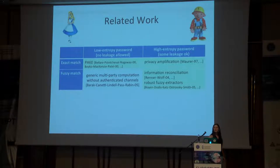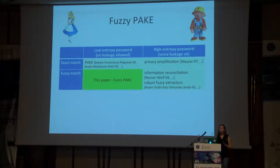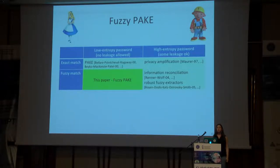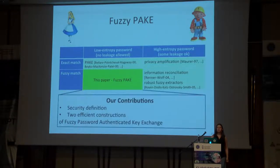So in our paper, we focus on the low-entropy fuzzy match cell in the table for the first time. We introduce a new primitive which we call Fuzzy Password Authenticated Key Exchange, or Fuzzy PAKE. We define Fuzzy PAKE and give two efficient constructions.